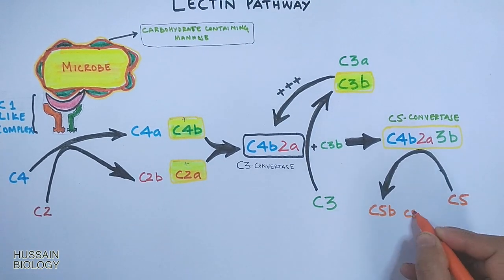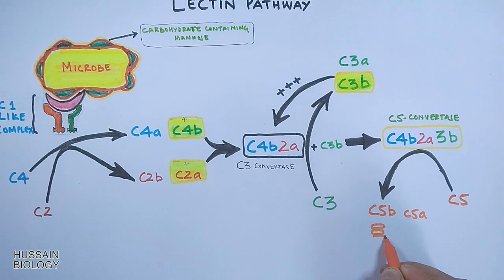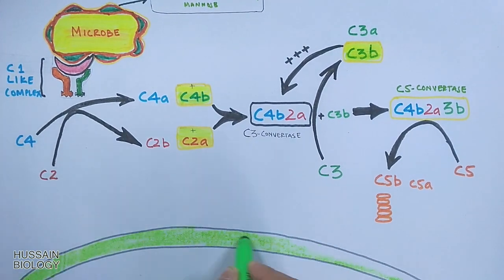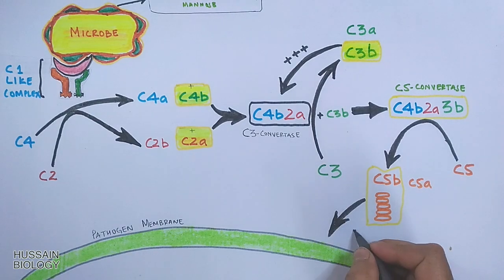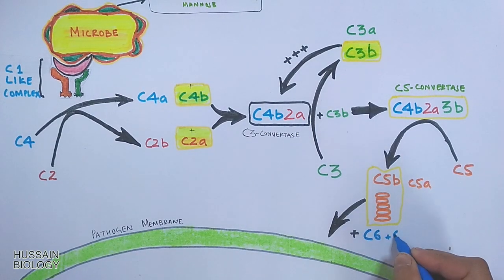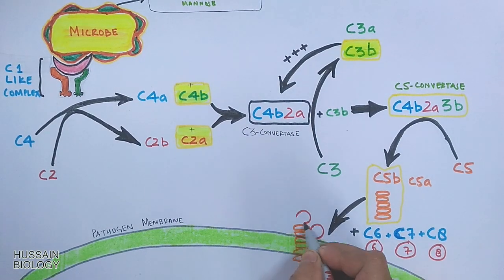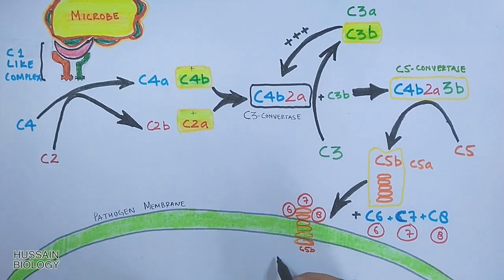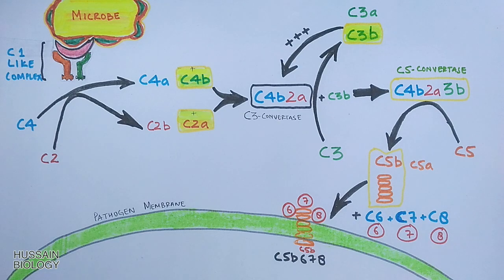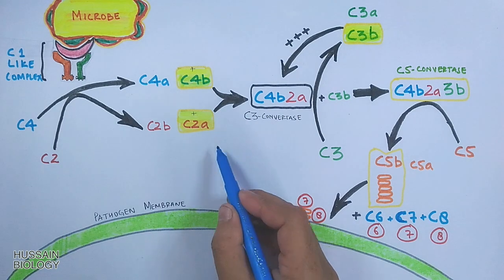The C5 convertase converts C5 into C5a and C5b. C5b inserts into the pathogen membrane and recruits three other complement proteins: C6, C7, and C8. This forms the C5b678 complex in the pathogen membrane.